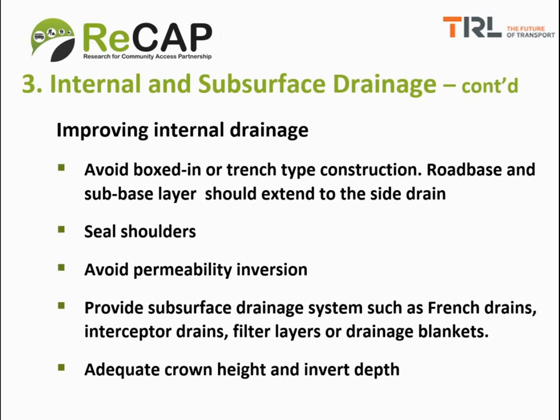Permeability inversion will often occur at the interface between the sub-base and the sub-grade, because most sub-grades are cohesive and relatively impermeable fine-grained materials. Preventing it can be achieved by ensuring that permeability of pavement and sub-grade layers is at least equal or increasing with depth — for example, the permeability of the road base should be less than or equal to that of the sub-base in a three-layered system. For low-volume roads, where material choice is limited, the road shoulder should be sealed to ensure lateral wetting does not occur under the wheel track.